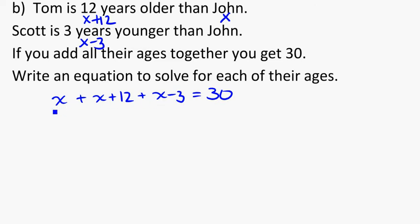So we need to get all these x's together. I've got 1, 2, 3 x's. What does that add to? Well, 3 x's is going to be 3x. And when looking at the numbers, I've got plus 12 and minus 3. So that's going to be plus 9 is equal to 30.